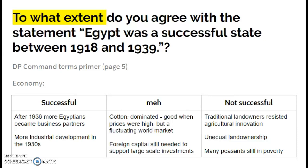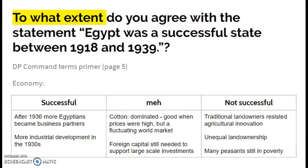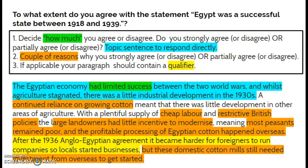Going back to the previous slide, some criteria you might use: how successful is Egyptian economic development, how successful is Egypt in terms of political stability, and how successful is Egypt in getting rid of British influence? One way to approach this is to organize your notes into topic-based ideas. For the economy, I've divided it into things that are successful, things that are mixed, and things that are not successful — measuring success against the criteria already set out, such as independent Egyptian businesses, industrialization, increased cotton output, and securing good prices.